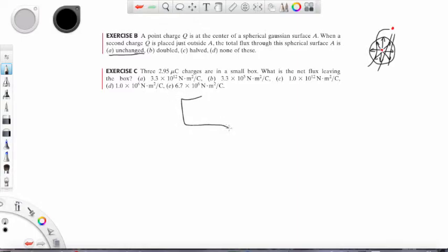In exercise C we have three charges within a box. And we are supposed to calculate the total flux that they are producing. We will use Gauss's law to answer this question. So the total flux is the surface integral of E times dA. And from Gauss's law we know that this is equal to the Q enclosed divided by E zero.